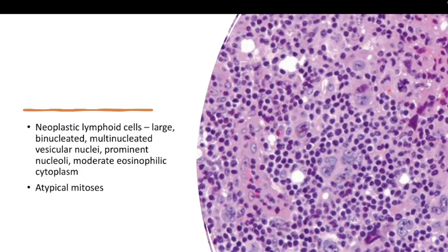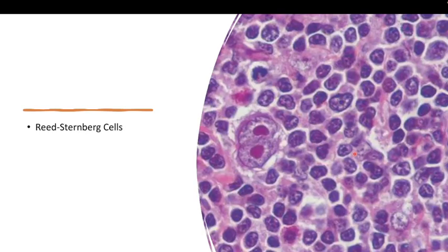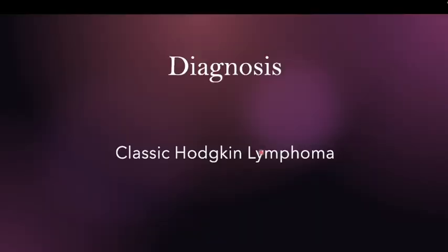And you have atypical mitosis. Usually in postgraduate studies, we will also ask about mummified cells — these are tumor cells that are dying, like a mummy. These are the characteristics of this tumor. And in some of the tumor, you have these binucleated large tumor cells with very eosinophilic, bright eosinophilic nucleoli, like an owl's eye. This is what we call a Reed-Sternberg cell. This is the characteristic of a classic Hodgkin lymphoma.